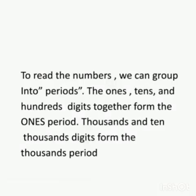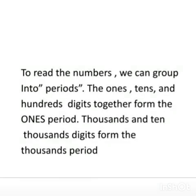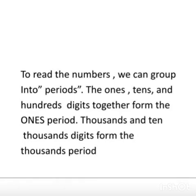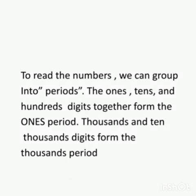To read the numbers, we can group them into periods. The ones, tens, and hundreds digits together form the ones period. The thousands and ten thousands digits form the thousands period.